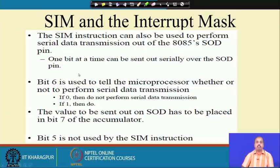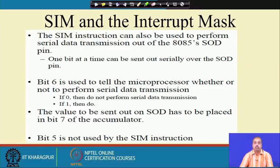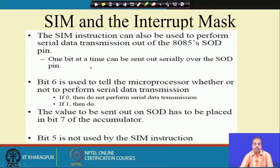SIM can also be used for serial data transmission via the SID and SOD pins of the 8085. Bit 6 tells the microprocessor whether or not to perform serial data transmission — if 0, do not transfer; if 1, when SIM is executed the value to be sent on SOD is placed in bit 7 of the accumulator. Bit 5 is not used by SIM.